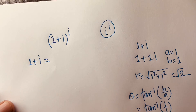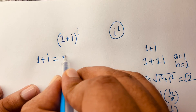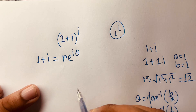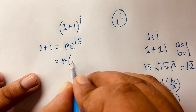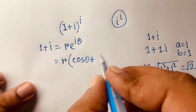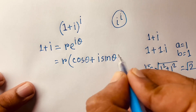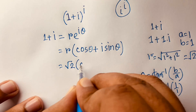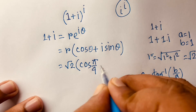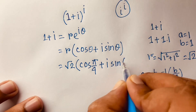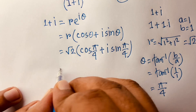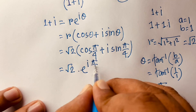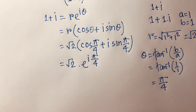So we can write 1+i in polar form as r·e^(iθ), which equals r·(cosθ + i·sinθ). With r=√2 and θ=π/4, this becomes √2·(cos(π/4) + i·sin(π/4)), which equals √2·e^(i·π/4).